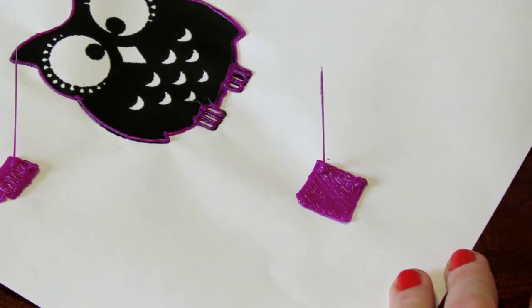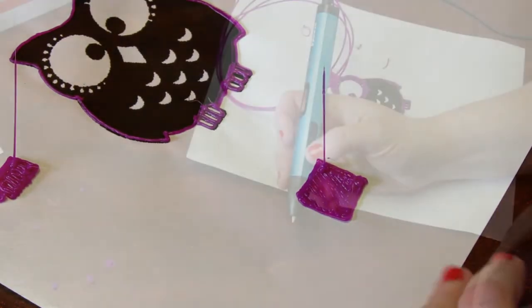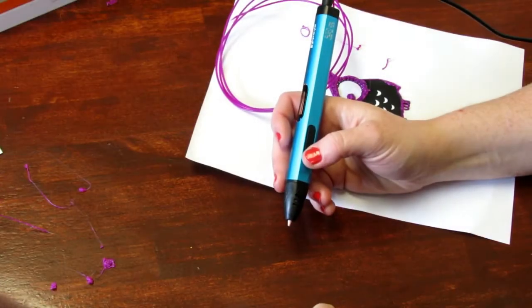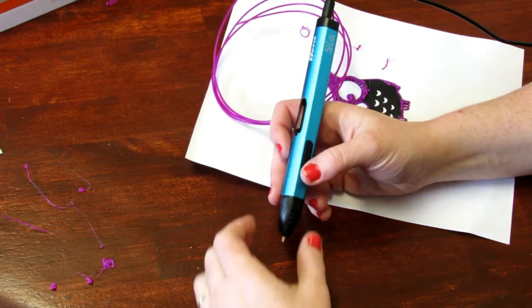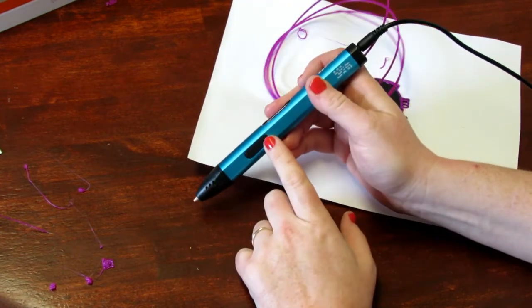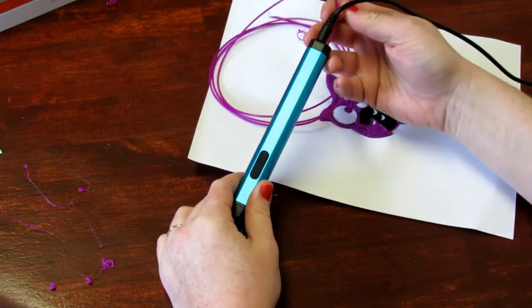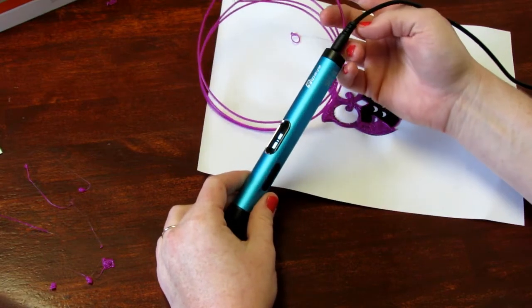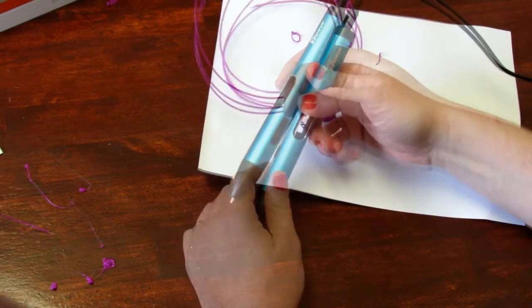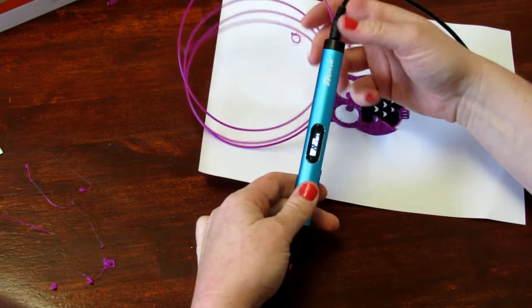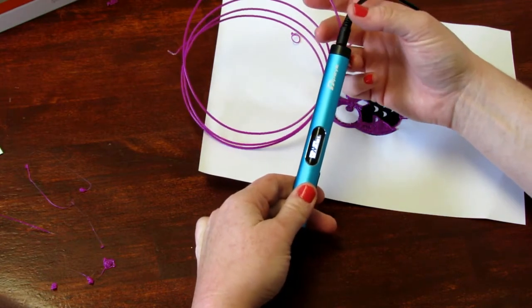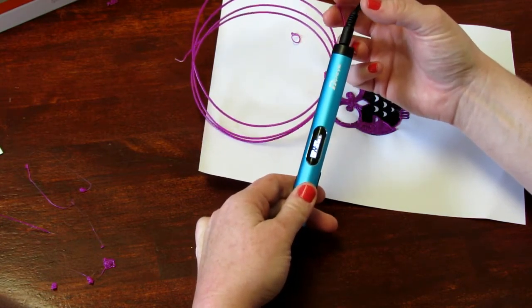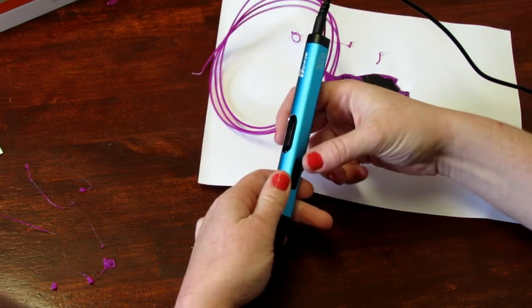When you're finished with your color, you can just press the back feed and it will slowly feed out your filament. When your filament is completely out, you'll hear it run. It might run another five to ten seconds and there's no way of turning it back off, so it'll automatically stop.